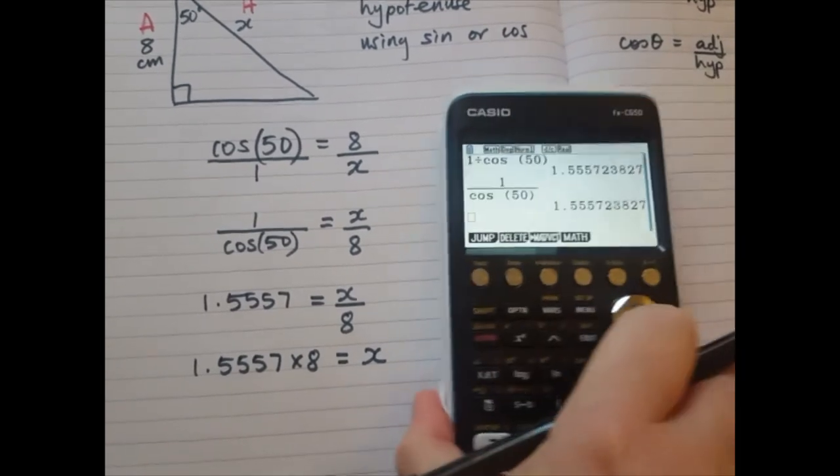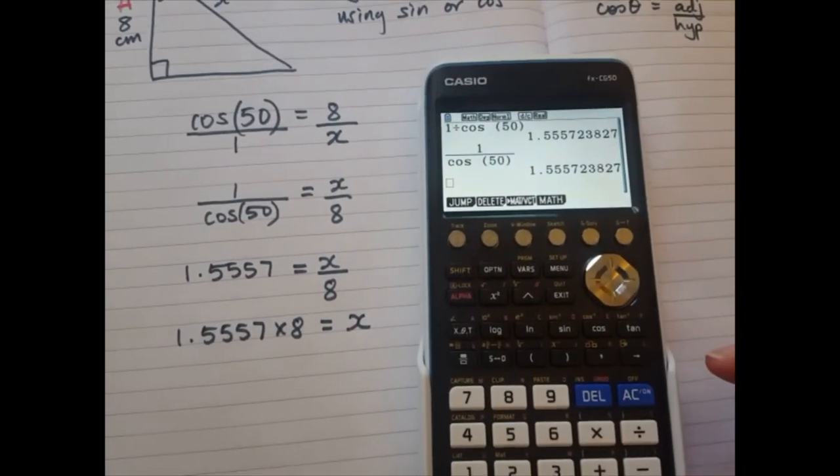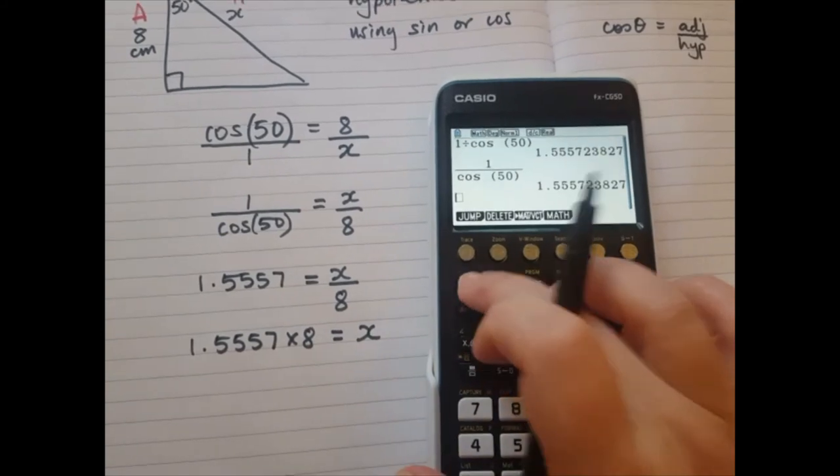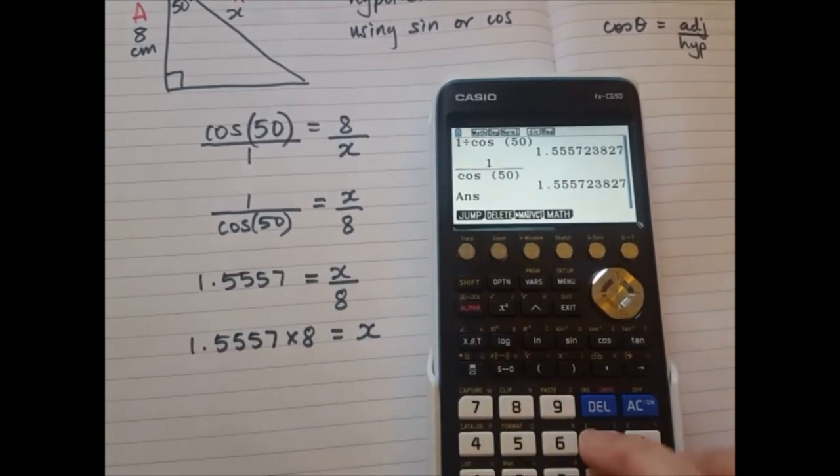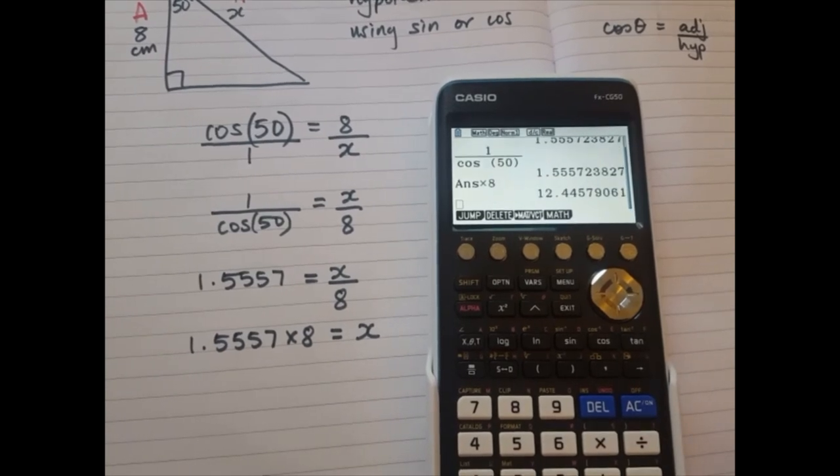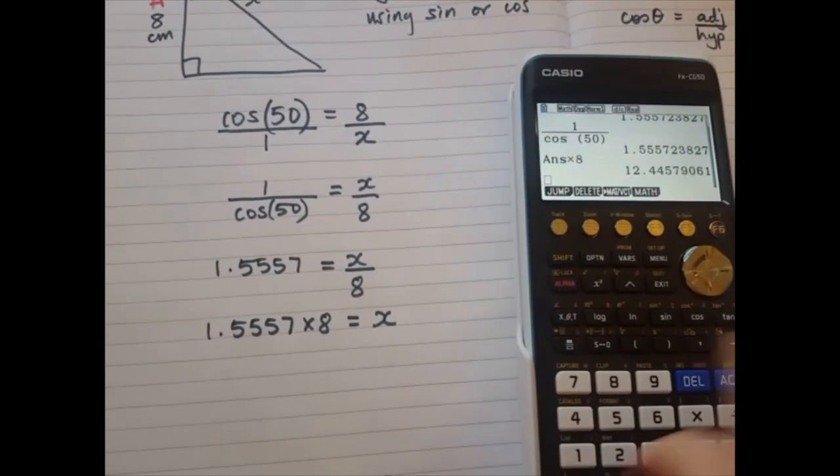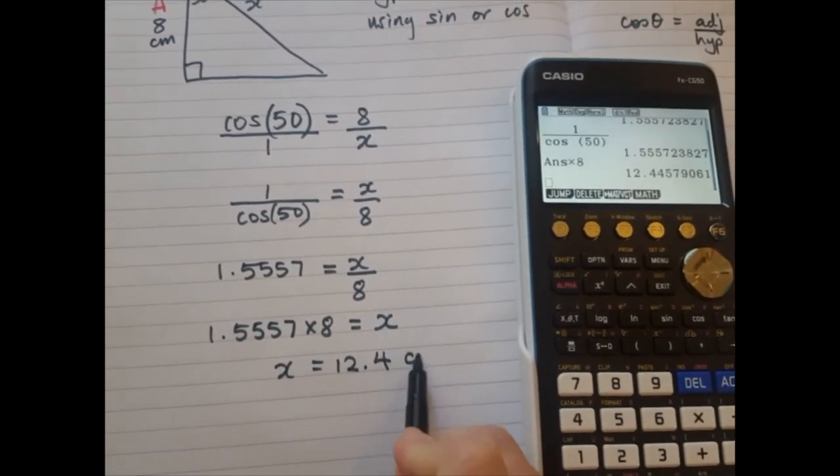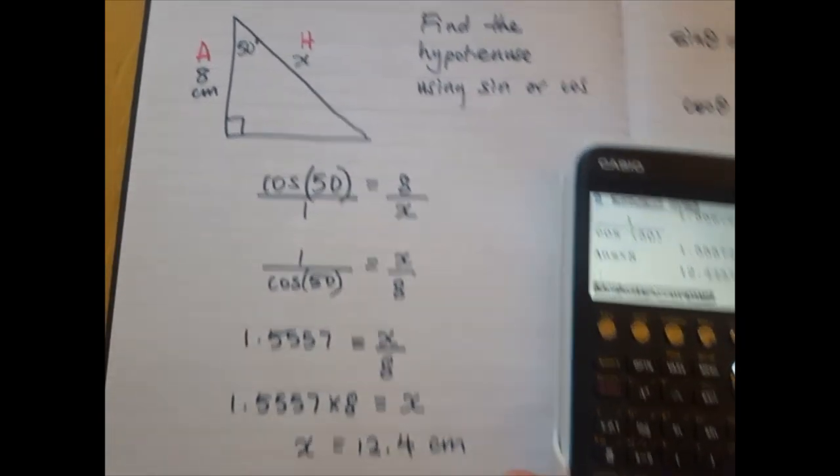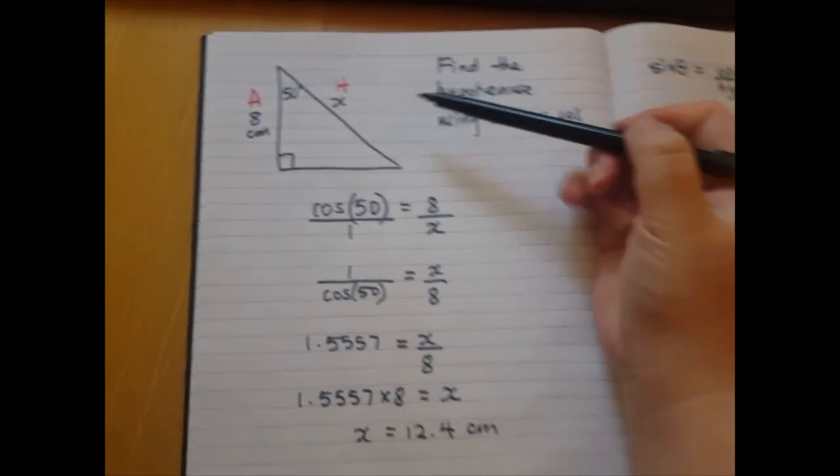So let's do that on our calculators. I'm going to use the answer key. So answer times 8. And that is my final value. x equals 12.4 centimetres. That means my hypotenuse was 12.4.